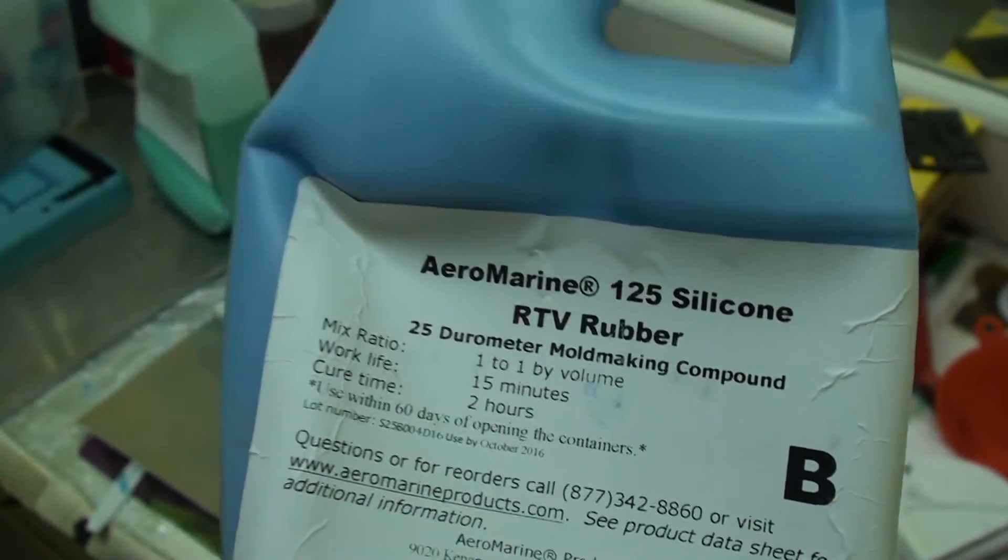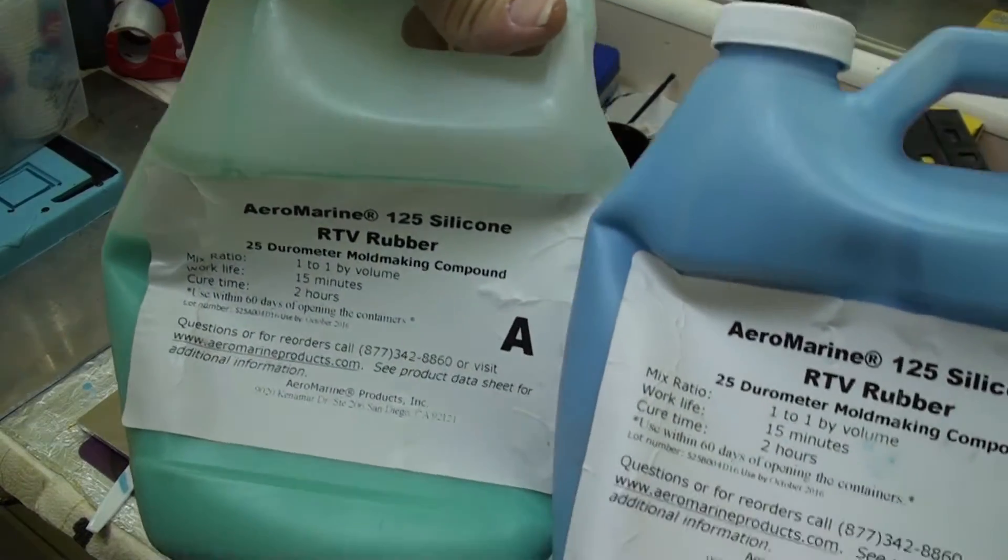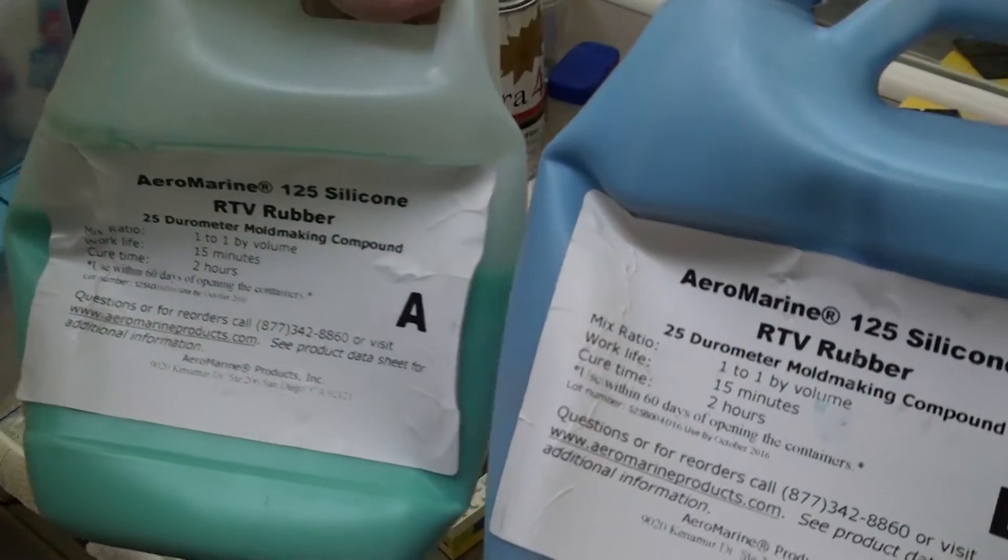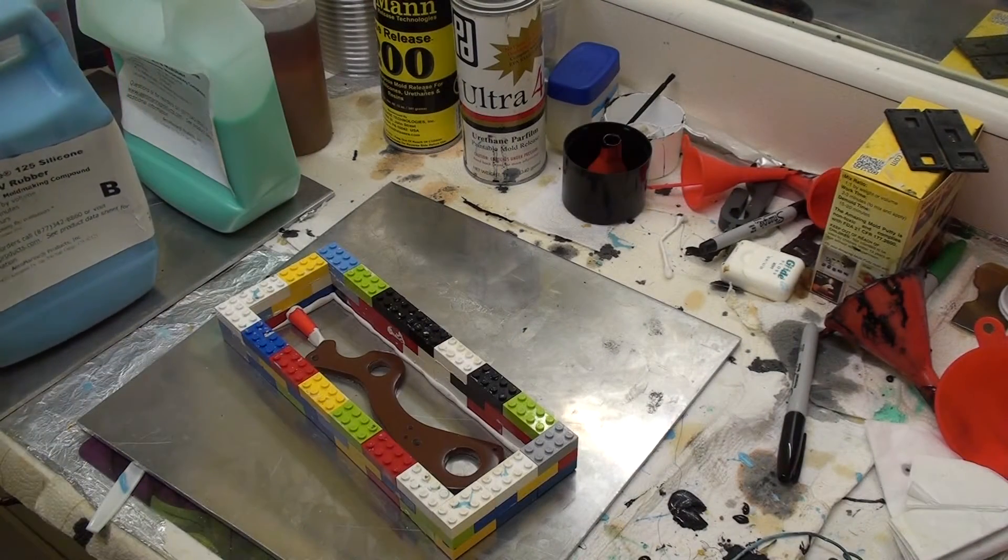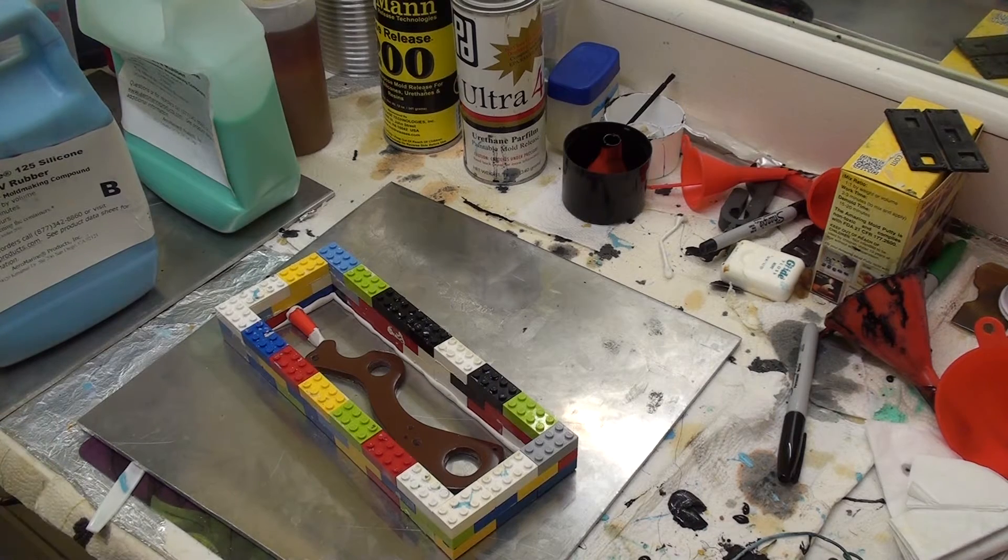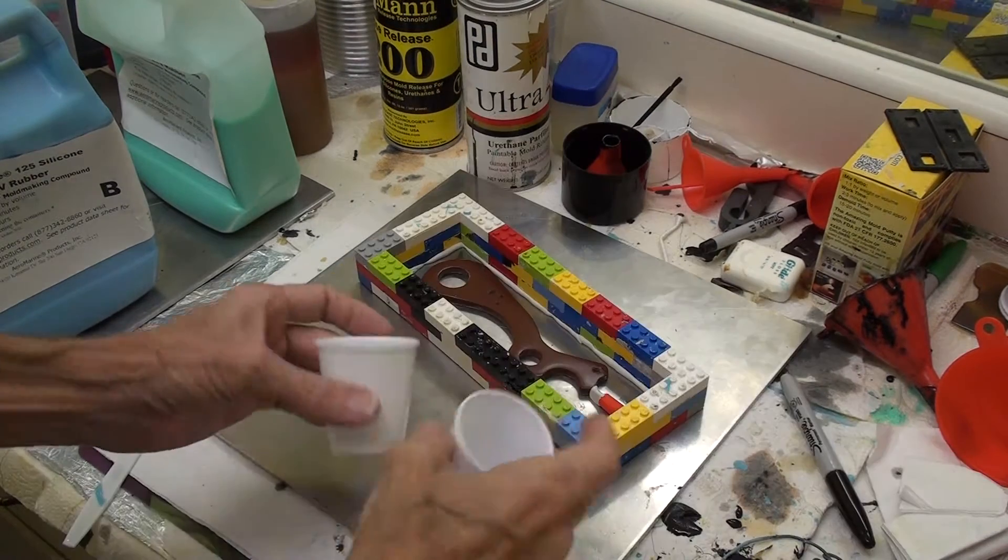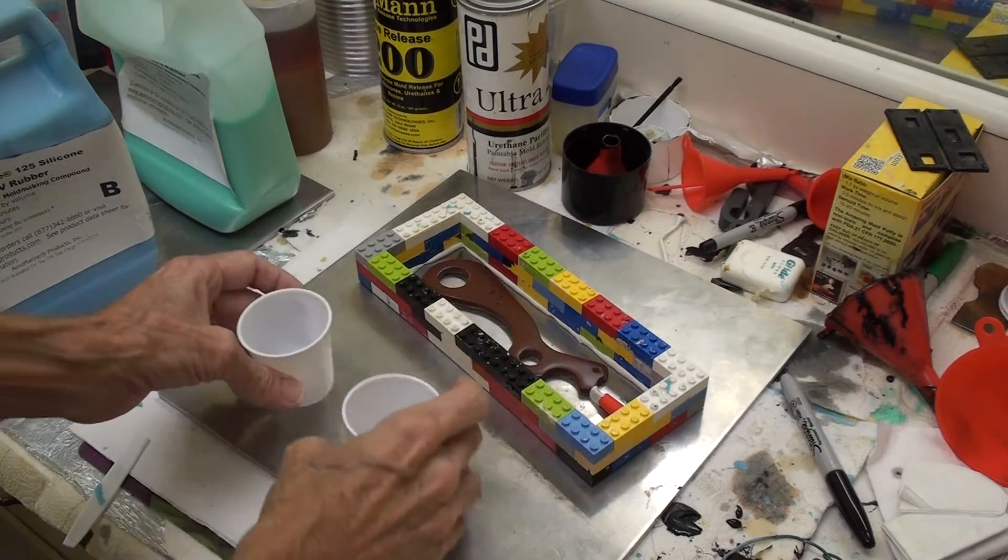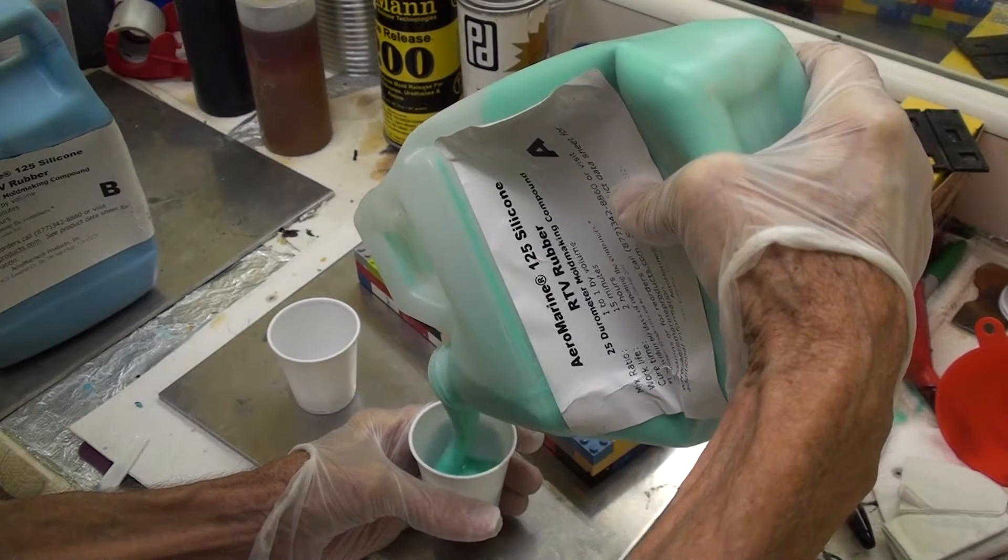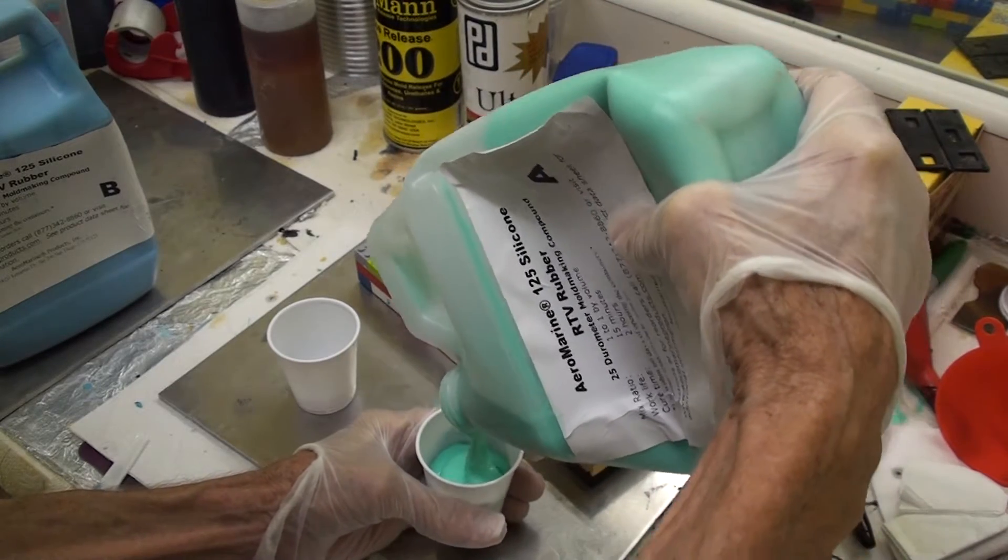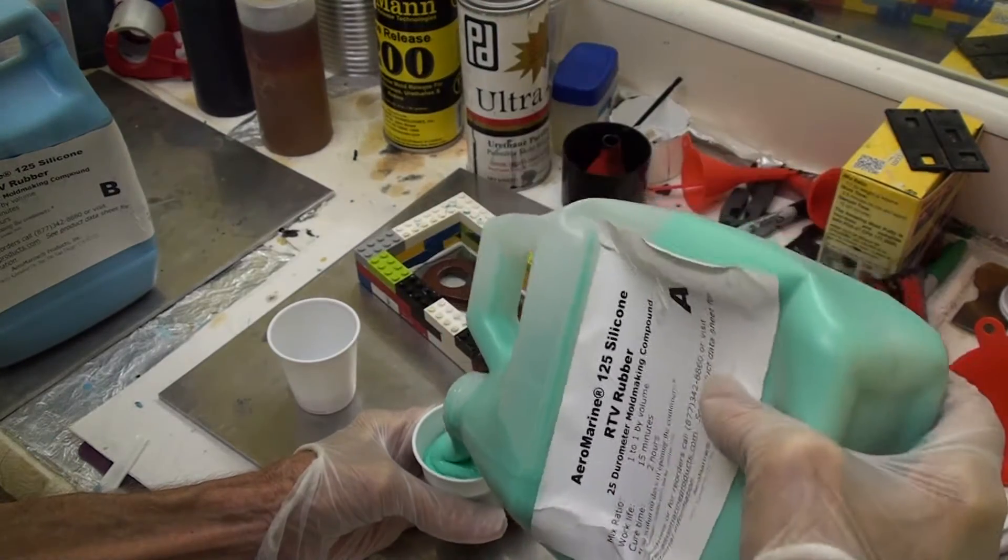This is the RTV rubber that I use. It's made by Aeromarine Products and they sell it on eBay. It's easy to use. It's a one to one mix by volume so I don't have to weigh it. I use these little cups to make it easier for me to measure out equal volumes of part A and part B of the mold rubber.